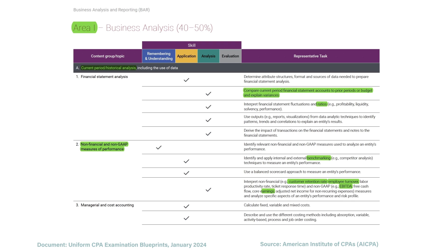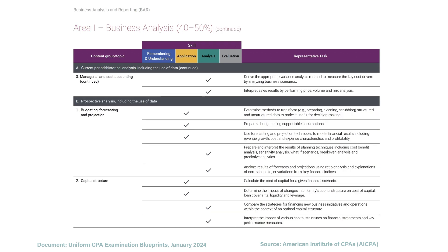From there we go into managerial and cost accounting. We need to know the difference between fixed costs, variable costs, and mixed costs. Then we need to know about different costing methods such as absorption costing, variable costing, activity-based costing, process costing, and job order costing — these involve a lot of calculations. From there, we need to look at variance analysis, and then price, volume, and mix analysis.